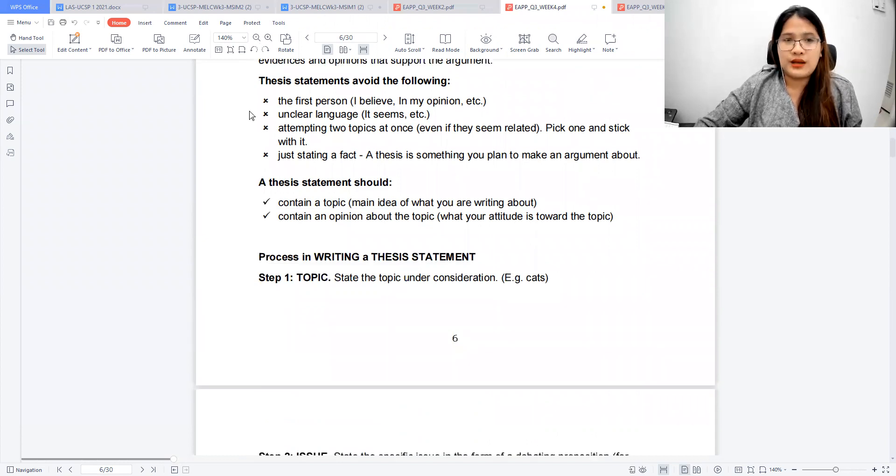So thesis statements, when writing thesis statements, you have to avoid the following: the first person, I believe in my opinion, because in this case, it appears less forceful, it appears more subjective. And then unclear language, like it seems, it appears, because that means there's less conviction. Attempting two topics at once. Sometimes you have our tendency to do that. I'm guilty, I myself am guilty. Even if they seem related, just pick one and stick with it. And just stating a fact. So it's not just presenting something that's already given. You're actually arguing. You want to make an argument about it.